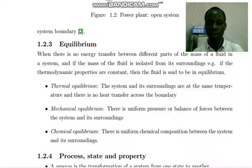We have three types of equilibrium. Thermal equilibrium occurs when the system and its surroundings are at the same temperature and there is no heat transfer across the boundary. Mechanical equilibrium occurs when there is uniform pressure or balance of forces between the system and its surroundings. Chemical equilibrium occurs when there is uniform chemical composition between the system and its surroundings.